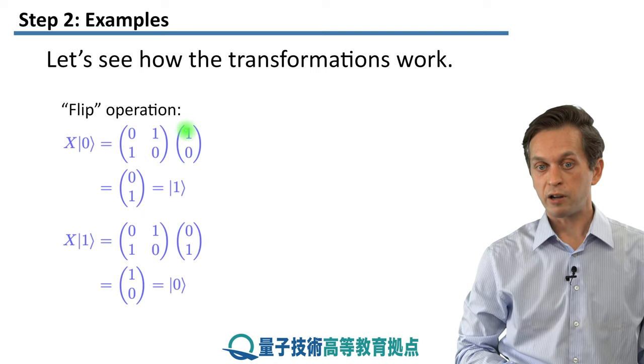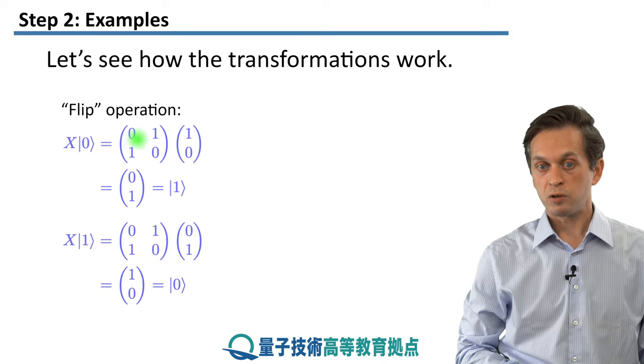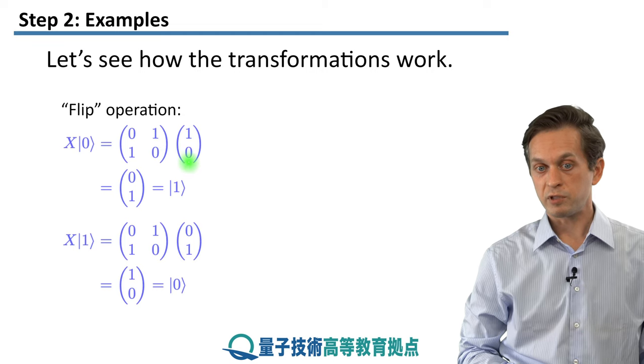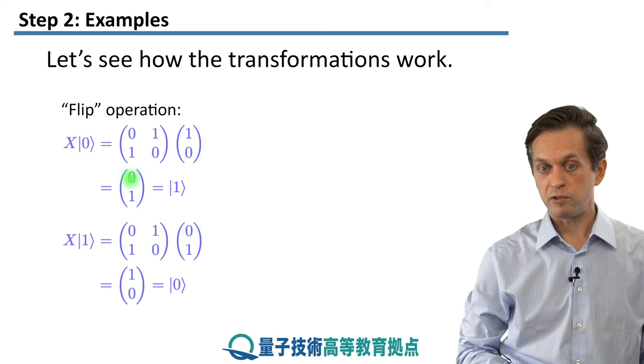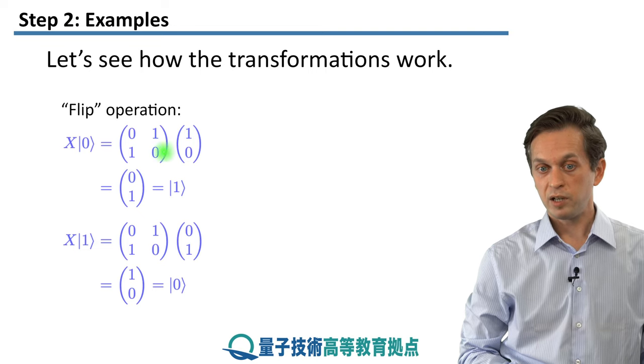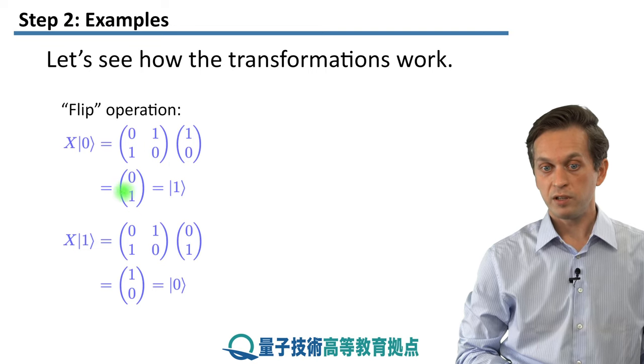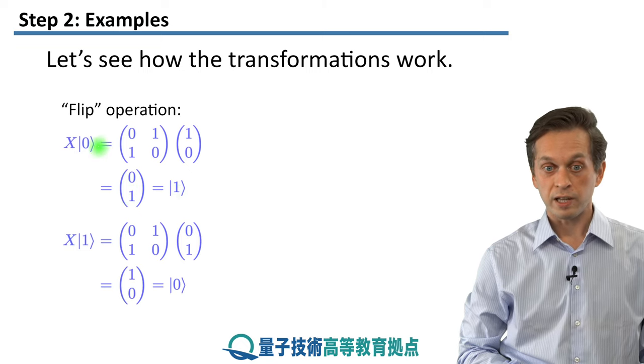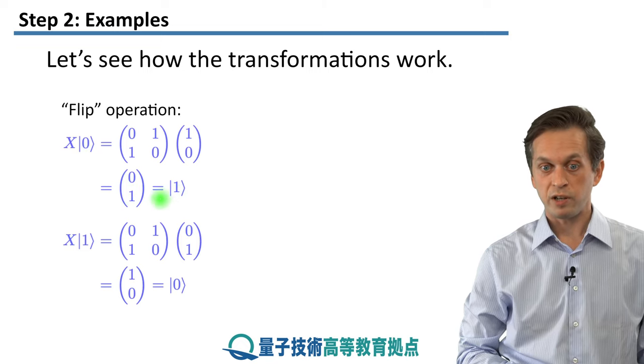You apply it or multiply by a ket 0. So you have this matrix 0, 1, 1, 0, multiplying our ket 0, which is represented in the column vector 1, 0. So we see that 0 times 1 is 0, plus 1 times 0 is 0. So we get a 0 here in this first element. But then we have 1 times 1 plus 0 times 0, which is 1. And you see that this is actually our ket 1.